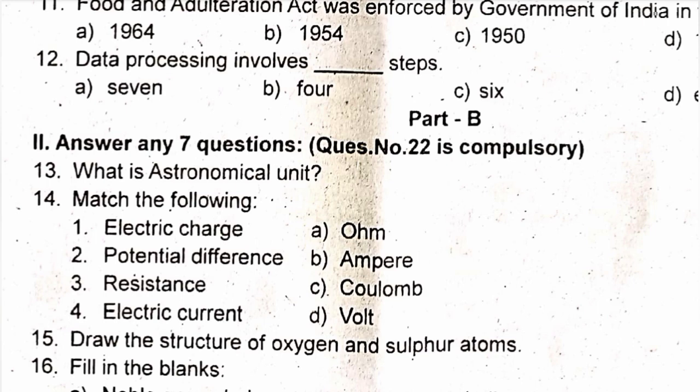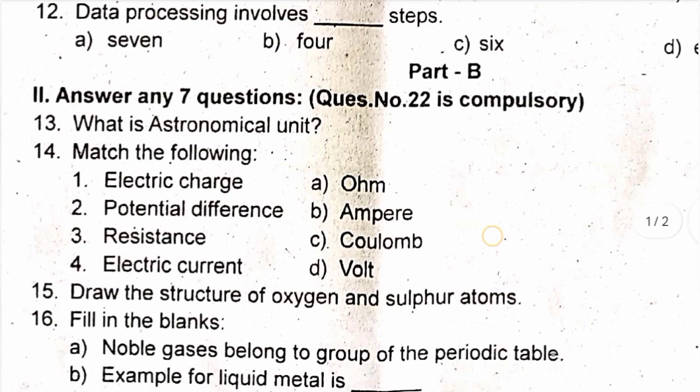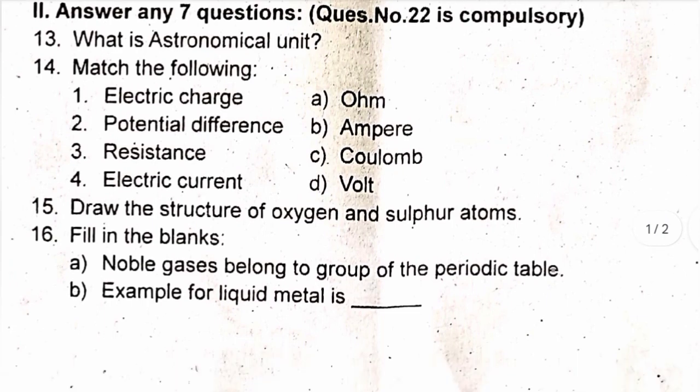Question 15: Draw the structure of oxygen and sulfur atoms. Question 16: Fill in the blanks. A) Noble gases belong to [which] group of the periodic table. B) An example of a liquid metal is [blank].